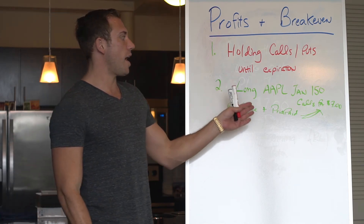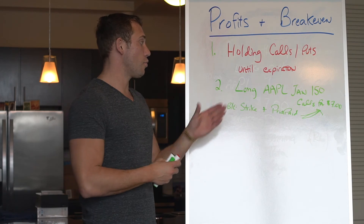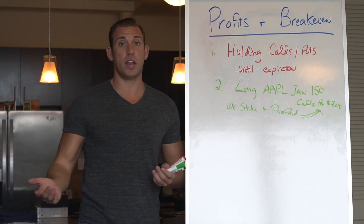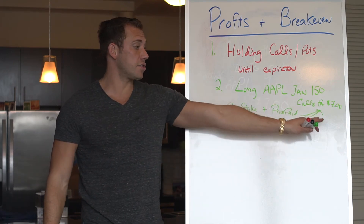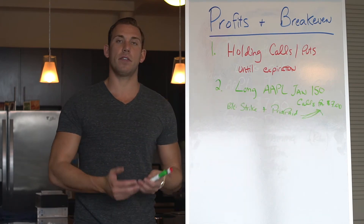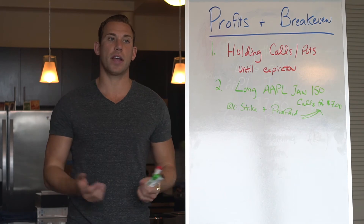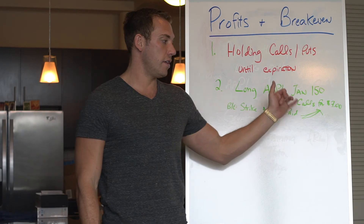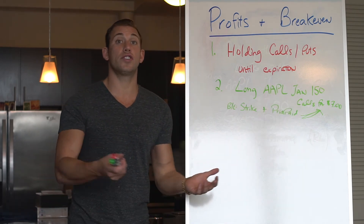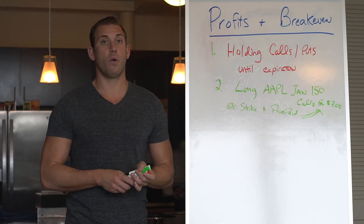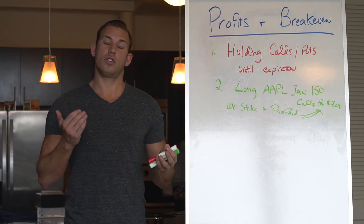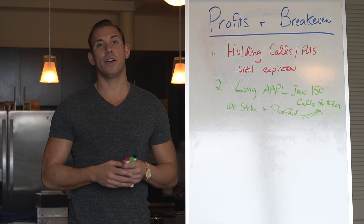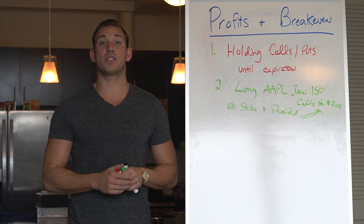The right but not obligation to buy Apple at 150 between now and January — if I was to hold it, I paid $7, so 150 plus seven is where the stock would have to go for me to break even. Simple and easy: breakeven is strike plus the price paid — 157. If I was long the Jan 100 calls for $55, strike price 100 plus 55, our breakeven is 155.